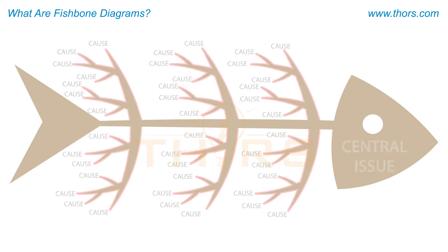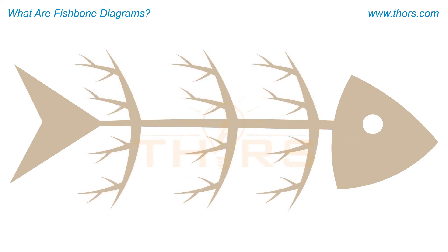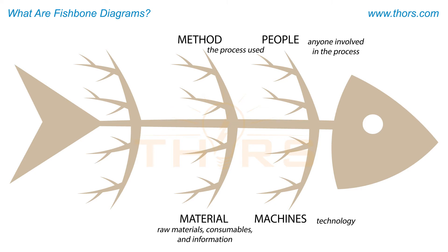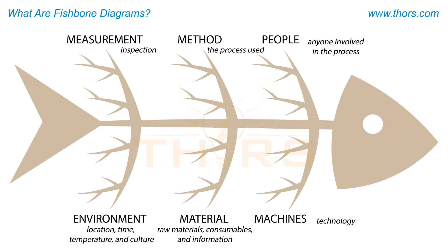The causes are often sorted into six major categories: people, or anyone involved in the process; machines, or technology; method, or the process used; material, such as raw materials, consumables, and information; measurement, or inspection; and environment, or conditions such as location, time, temperature, and culture.